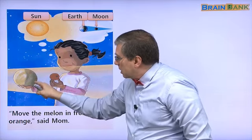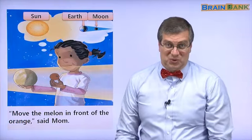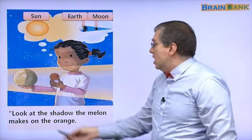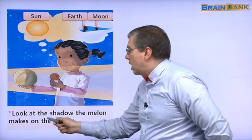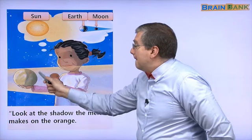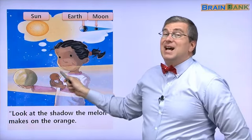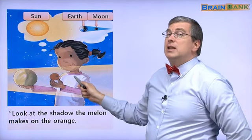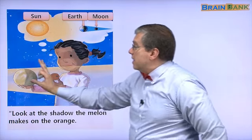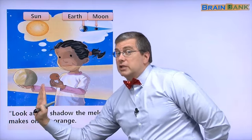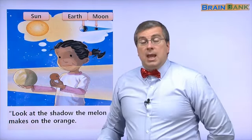And now, look. Wow. The shadow covers the whole moon, right? The whole orange. Look at the shadow the melon makes on the orange. The melon makes a shadow on the orange. Here is the sun. Here is the light. The earth, or the melon, blocks that light for the whole moon.